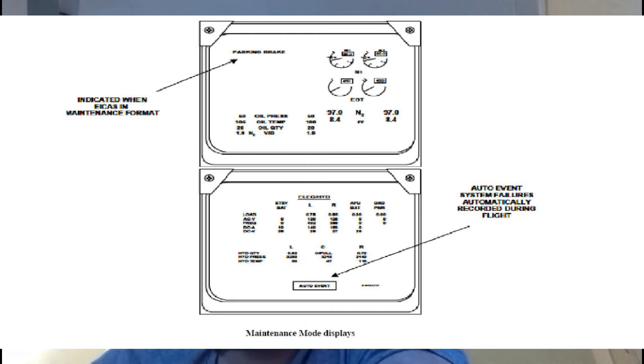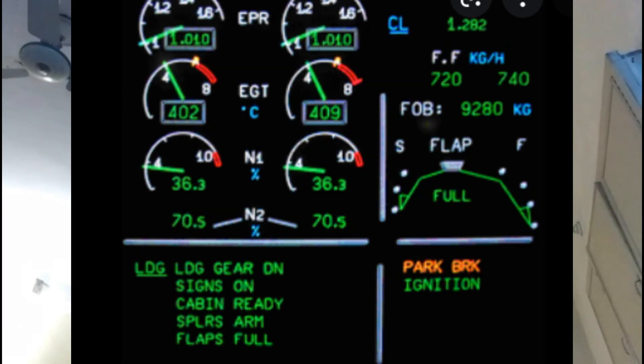In the event that multiple failures leave both display units and both computers inoperable, backup displays by discrete caution and warning lights and by standby engine indicators are provided. These indicators utilize LEDs to supply EPR, N1, N2, and EGT information.